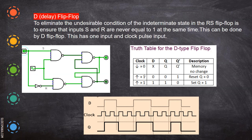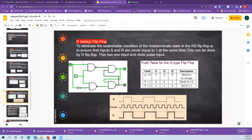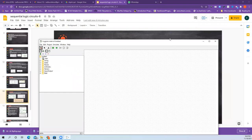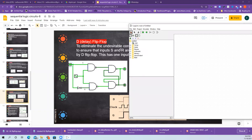During the positive edge triggering, when the clock pulse is positive and D is 0, Q is also 0 and Q bar will be 1. When during positive edge triggering D is 1, Q will also be 1 and Q bar will be 0. Now we'll see the circuit diagram, which uses a NAND gate.